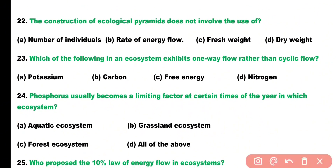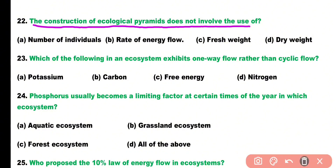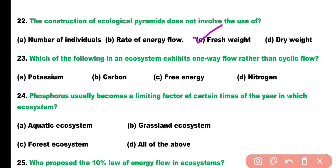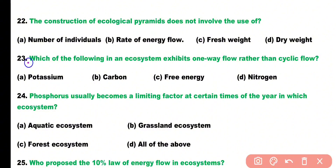Question number twenty-two. The construction of an ecological pyramid does not involve the use of: number of individuals, rate of energy flow, fresh weight, or dry weight? Correct answer is option C. Fresh weight is not used in the construction of an ecological pyramid.